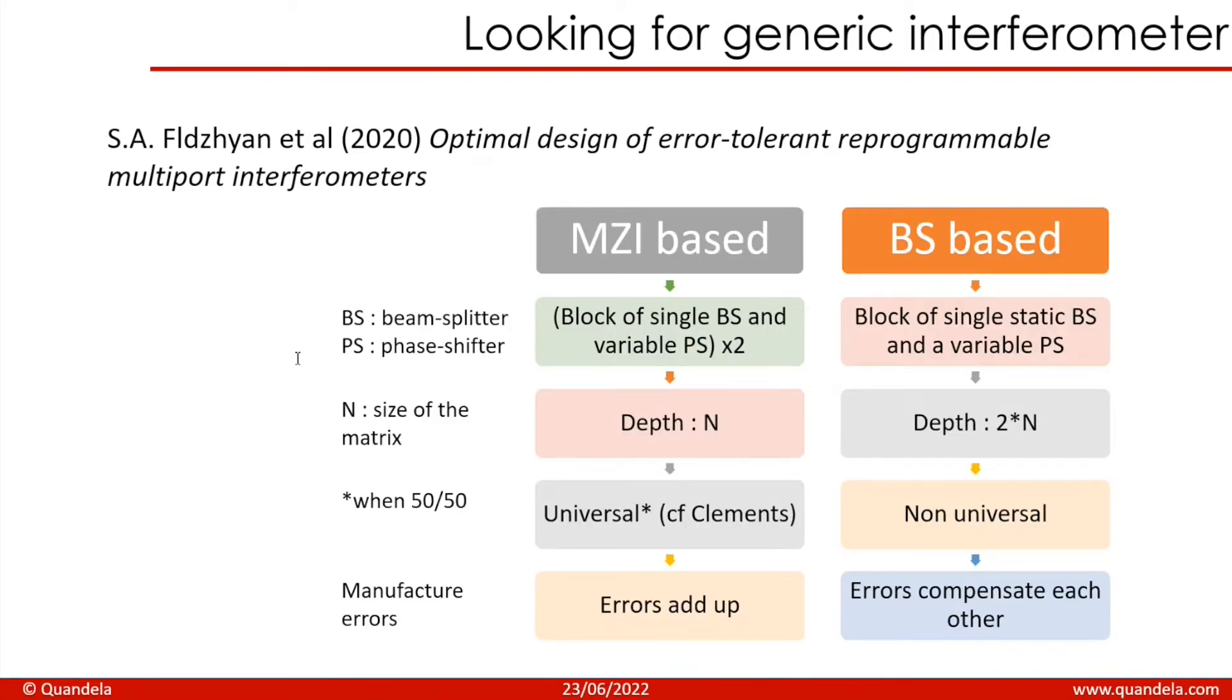Let's compare a circuit composed of blocks of MZ-based circuit to a circuit composed of blocks of single static beam splitter and a variable phase shifter. Their depth is different, the MZ-based circuit has a depth of size N, but the BS-based circuit has a depth of size 2N. The MZ-based circuit is universal when the reflectivity is 50-50, whereas the BS-based circuit is not universal.